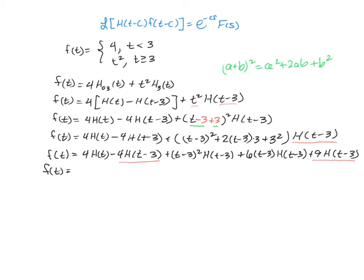We're going to have 4 times h(t), and then that minus 4 and that plus 9 get together to make plus 5h(t-3). And then we still have our (t-3) squared h(t-3) plus 6(t-3)h(t-3). And now we can go ahead and take our Laplace transform.